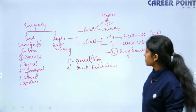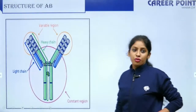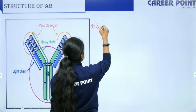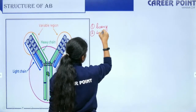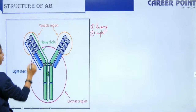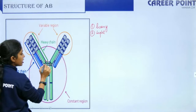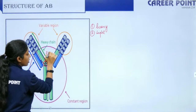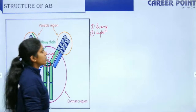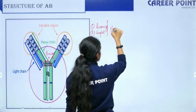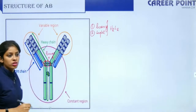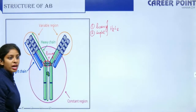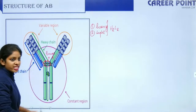The structure of an antibody: it has two heavy chains and two light chains. The heavy chains are joined together by a disulfide bond, and the region connecting them is known as the hinge. The blue-colored chains are light chains. We represent an antibody as H2L2 — two heavy chains and two light chains.